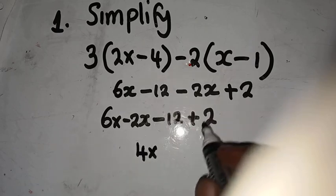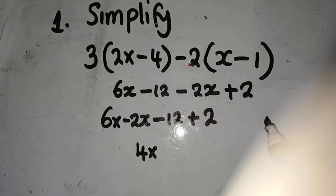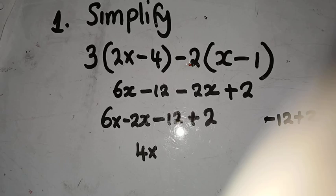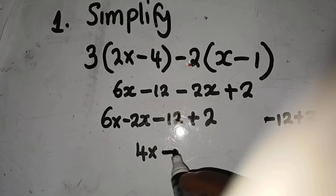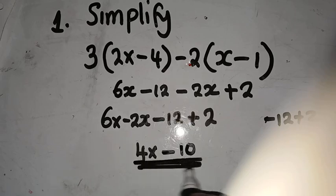Now look at the constants here: we have minus 12 plus 2. That is how you treat it — minus 12 plus 2 gives us minus 10. So our answer is 4x minus 10. That is what is supposed to be our answer, ladies and gentlemen.